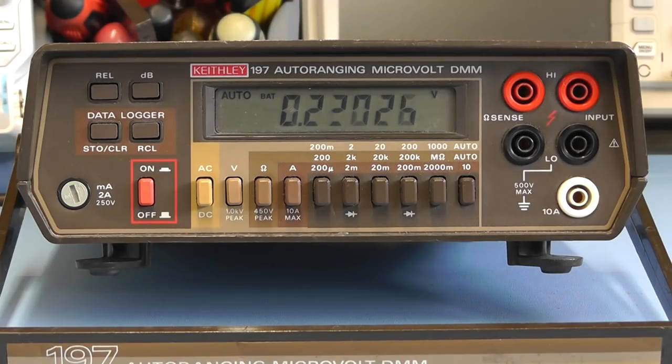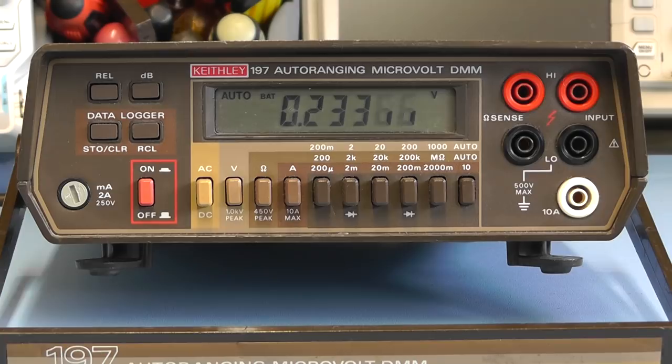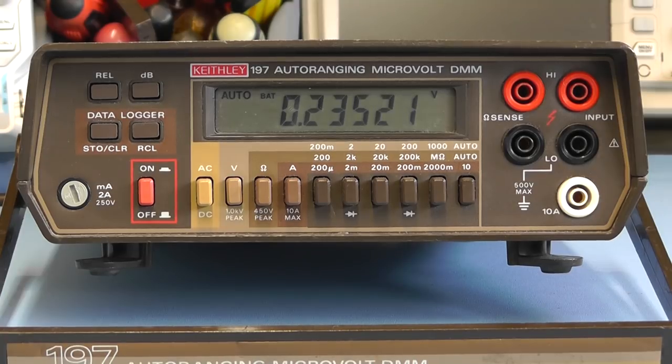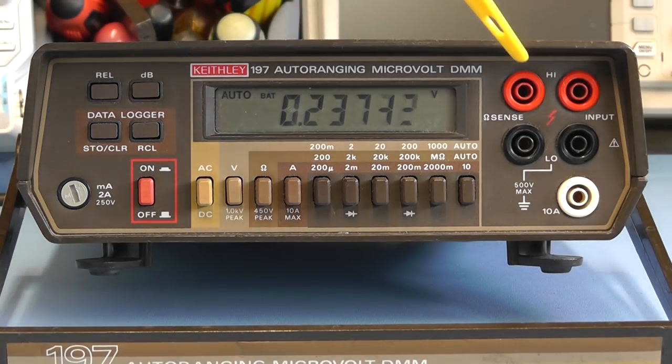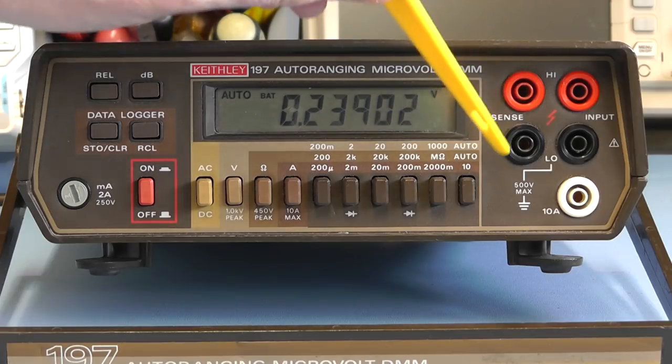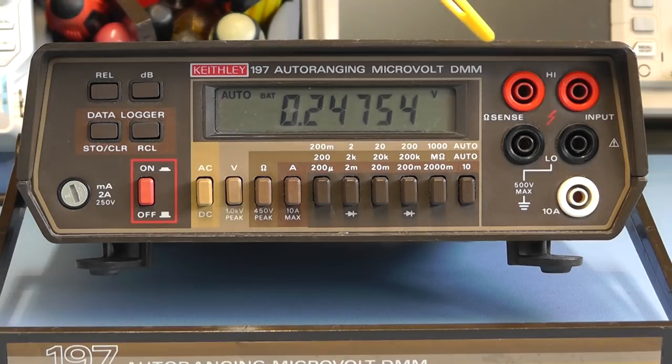Before we take the case off this meter I should just point out one other main difference between this and the Keithley 175 and that is it has two additional input terminals here which are used on the Ohms range and these are the Ohms sense terminals and they provide for a four wire resistance test with this meter and improve the accuracy.